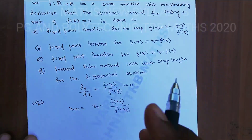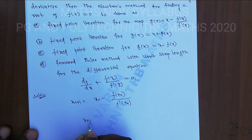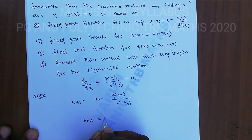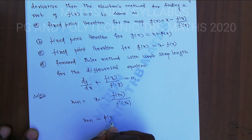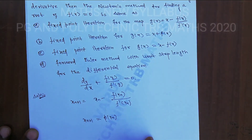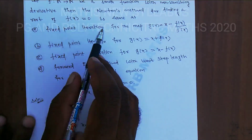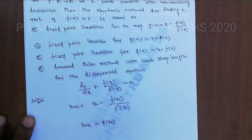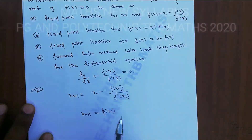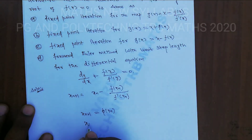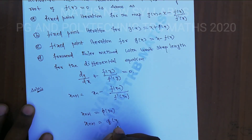It is a fixed point iteration. Fixed point iteration is x_{n+1} = g(x_n). This is the fixed point iteration. On the other hand, fixed point iteration is fixed point iteration for the map g(x). So g(x_n) is nothing but x_{n+1} = g(x_n).